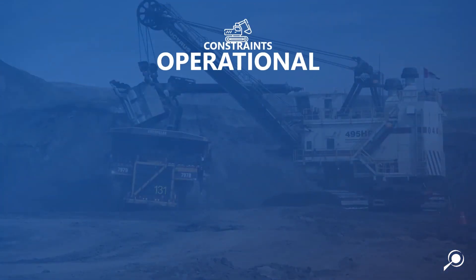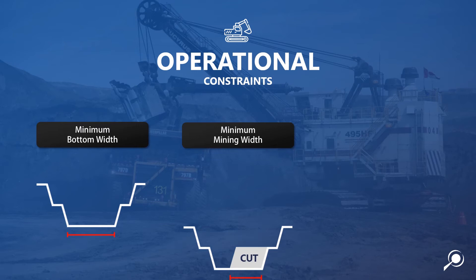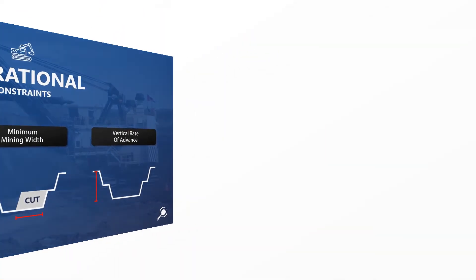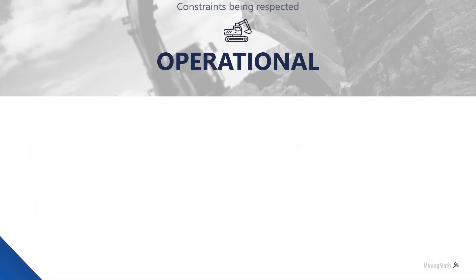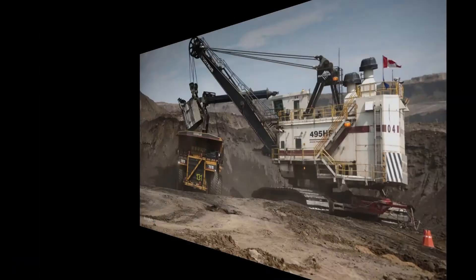One of the greatest achievements of SimSched DBS is its ability to control geometric parameters, producing solutions that are more realistic. You can specify a minimum bottom width, a minimum mining width, and a maximum sinking rate.